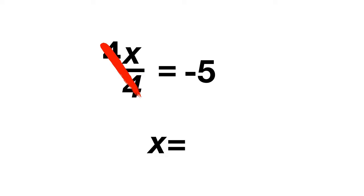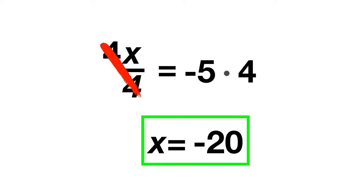Now we must do it to the other side. We have negative 5 times 4. What does that equal? Negative 5 times 4 just gives us negative 20.